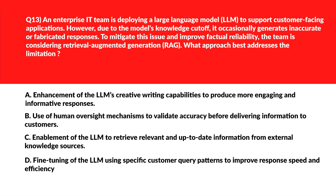Now let's look at this question — this is all about retrieval augmented generation, that is RAG. Option A says enhancement of LLM creative writing capabilities to produce more engaging and informative responses. Creative enhancement doesn't resolve factual gaps caused by outdated knowledge — incorrect. We'll move to option B. B says use of human oversight mechanisms to validate accuracy before delivering information to customers. Human validation adds oversight but doesn't extend the model's knowledge base — we'll eliminate it.